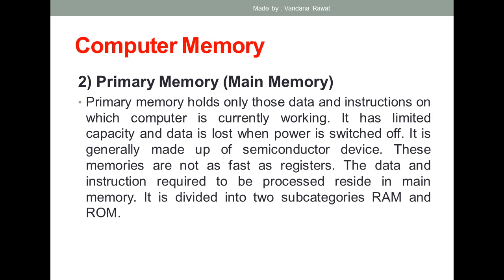The next type of memory is primary memory, also called main memory. Primary memory holds only those data and instructions on which the computer is currently working — it works on current data. It has limited capacity, but in comparison to cache memory it has somewhat larger capacity. One disadvantage is that data is lost when the power is switched off.